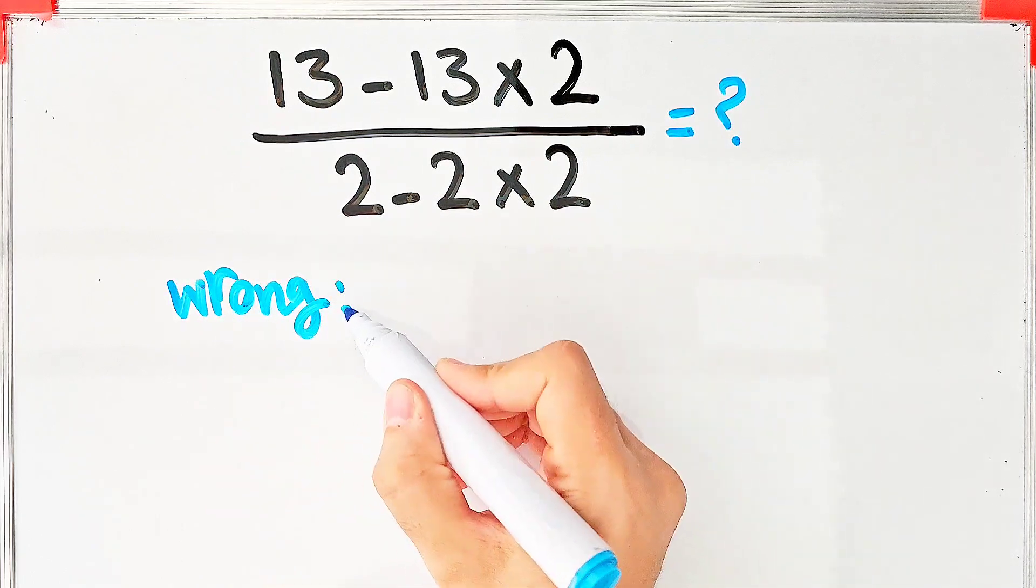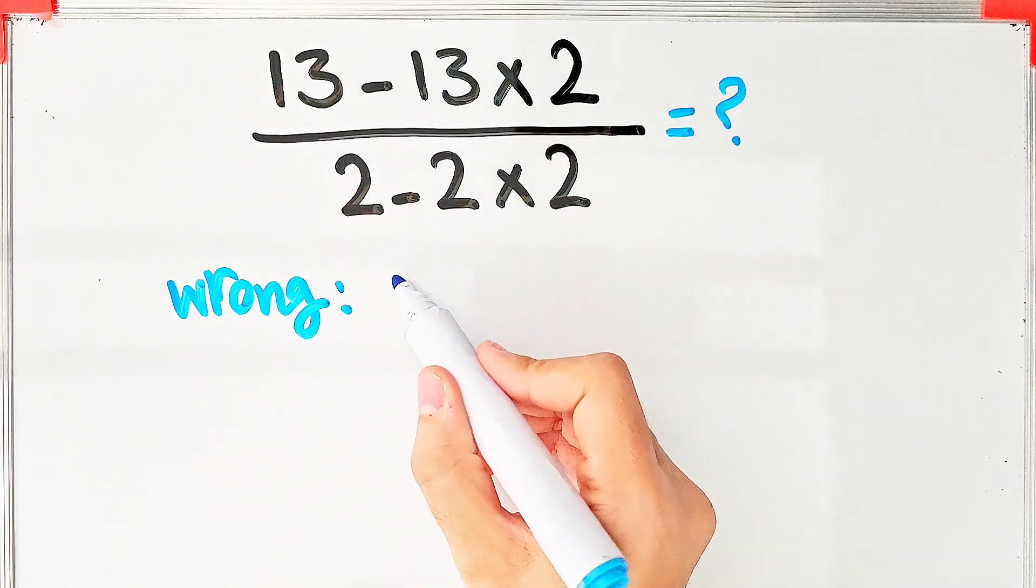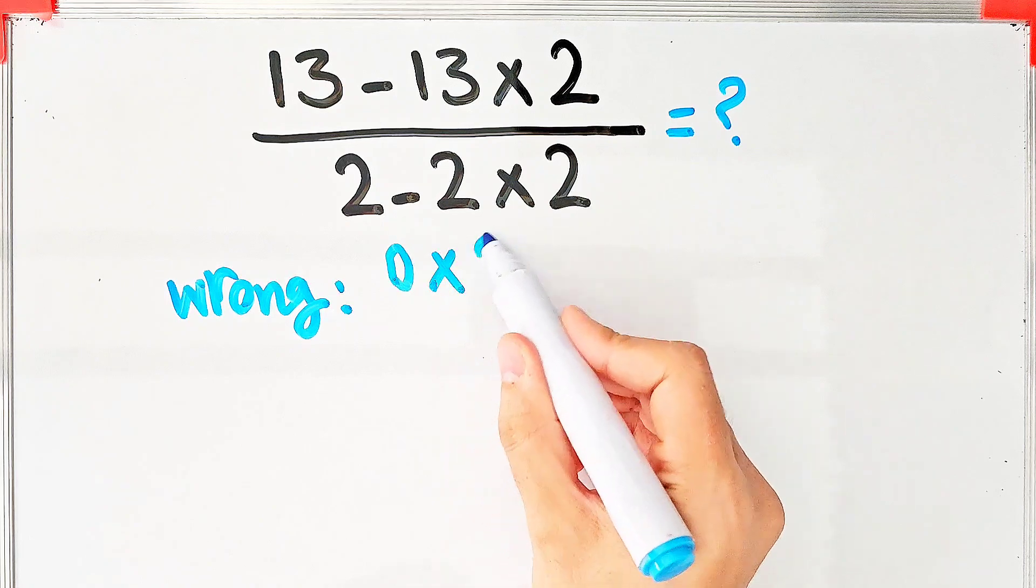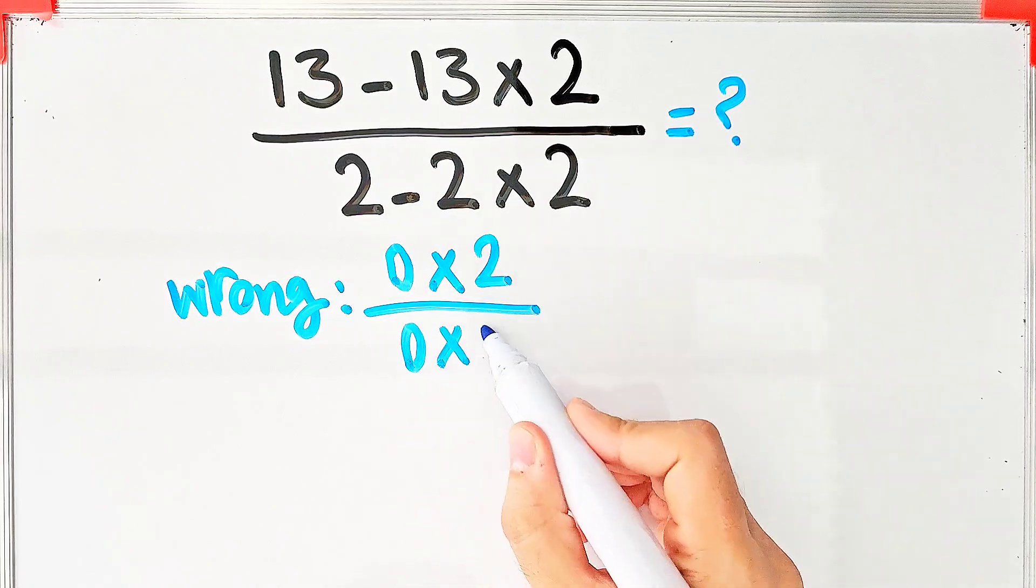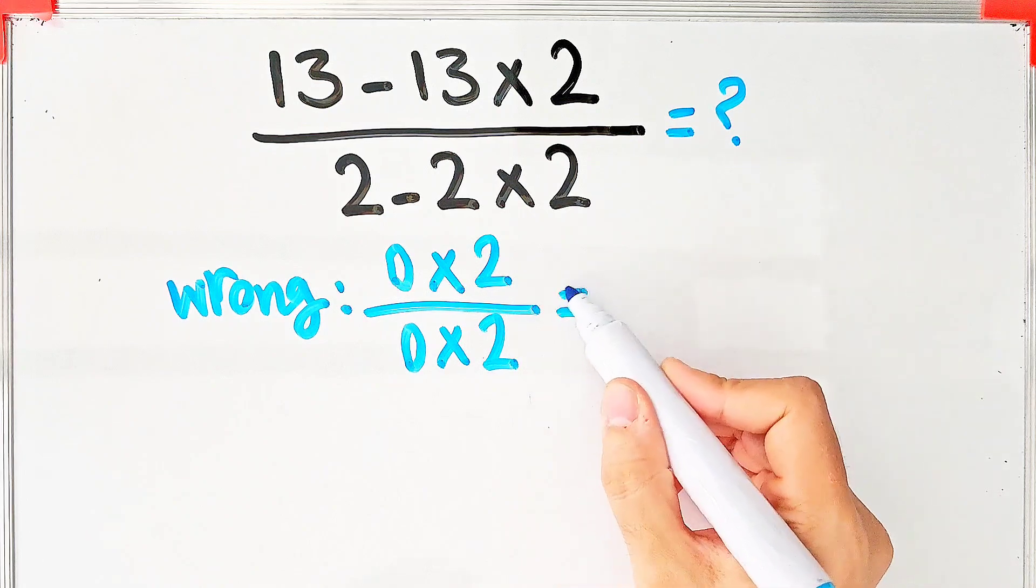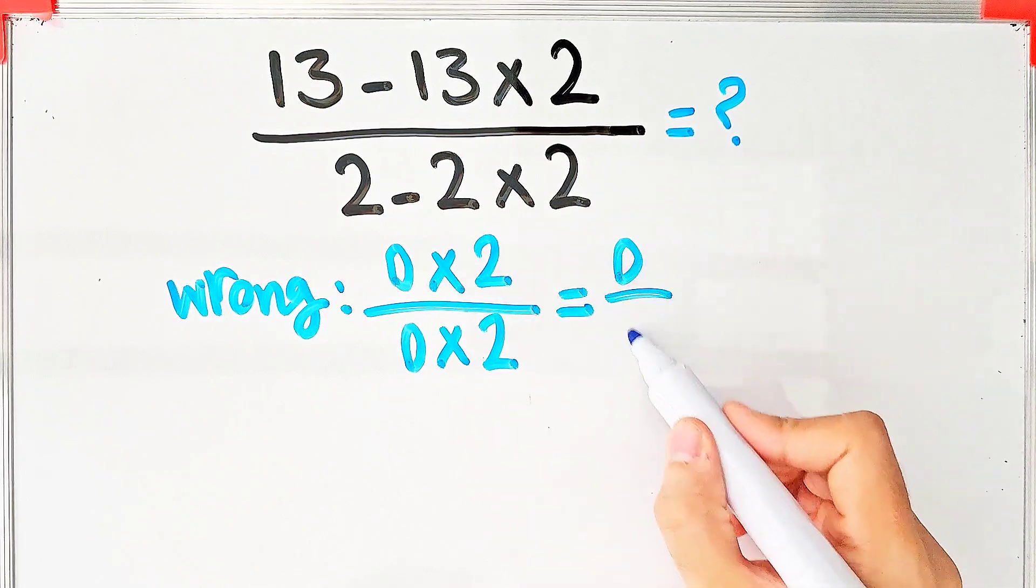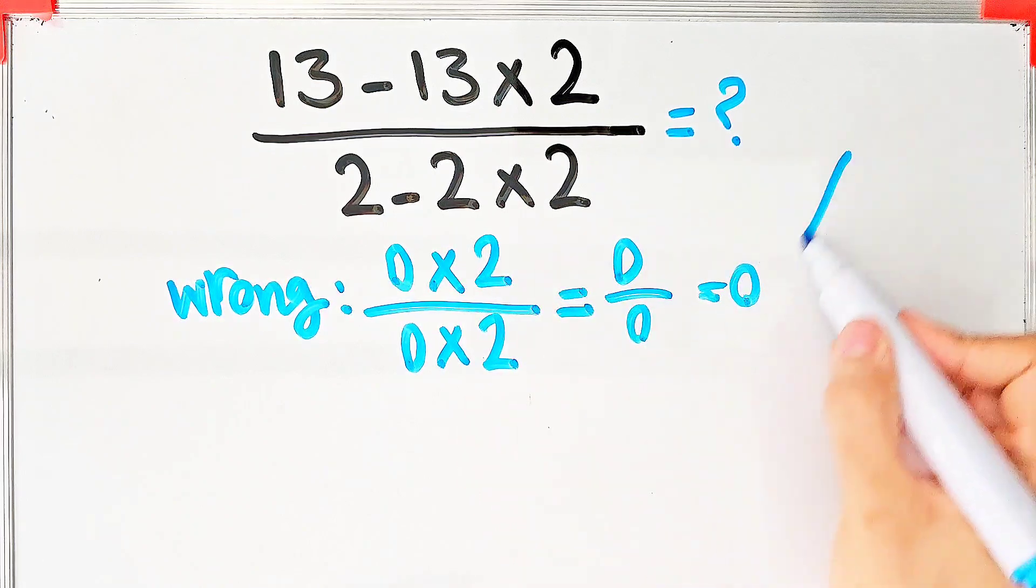solve this question like this: they say 13 - 13 = 0, 0×2 in the numerator, and 2 - 2 = 0, 0×2 in the denominator. They say the final answer of this question equals 0, but it's definitely wrong.